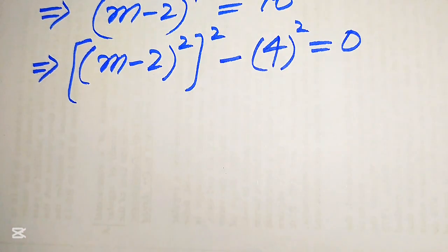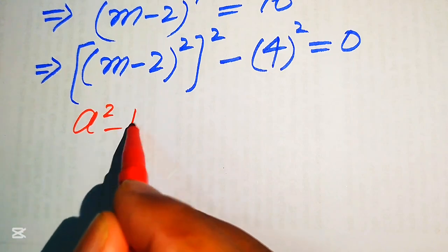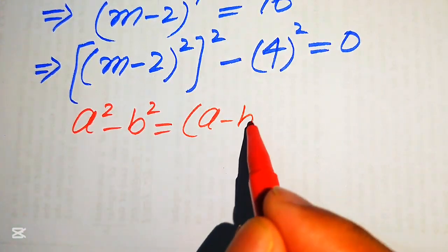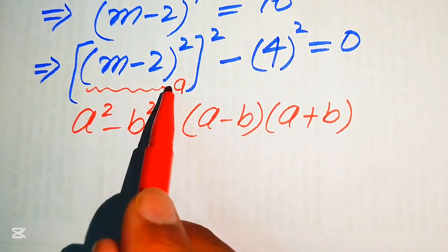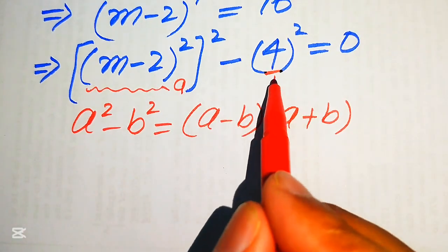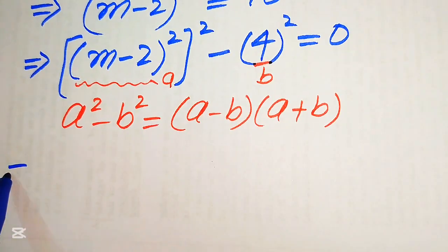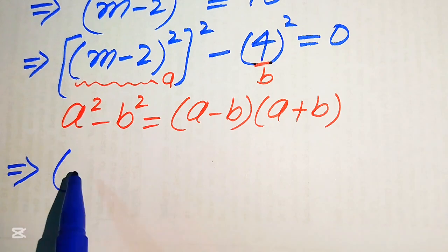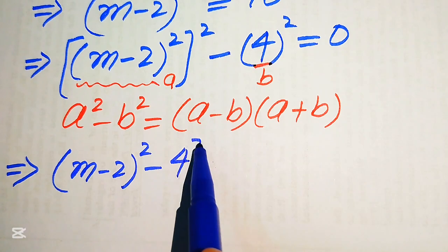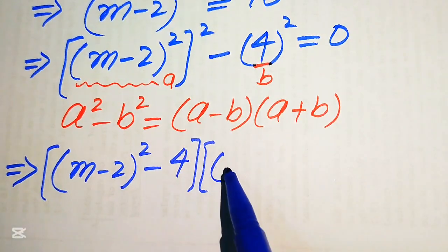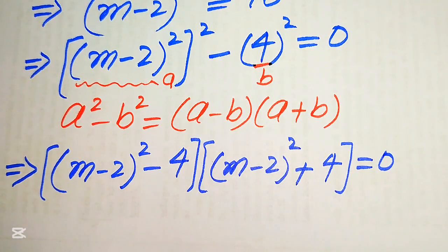Now we apply the difference of squares formula: a squared minus b squared equals (a minus b)(a plus b). Here, a is (m minus 2) squared and b is 4. Substituting, we get ((m minus 2) squared minus 4) times ((m minus 2) squared plus 4) equals 0.